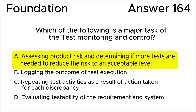All the rest of the answers are wrong. Answer B is wrong because logging the outcome of test execution is a major task of test execution — the test results should be logged there. Answer C is wrong because repeating test activities as a result of action taken for each discrepancy is retesting or confirmation testing, not a task of test monitoring and control.